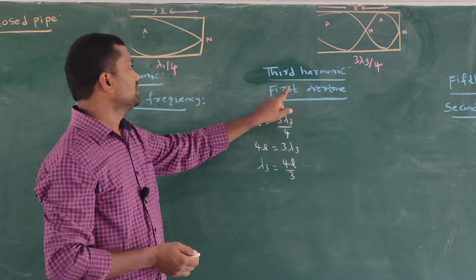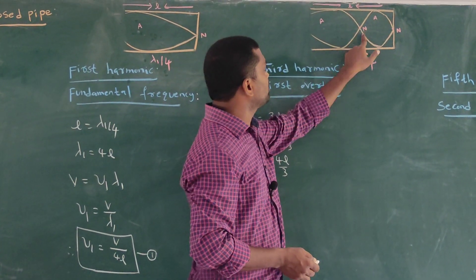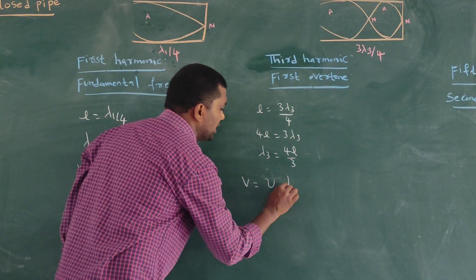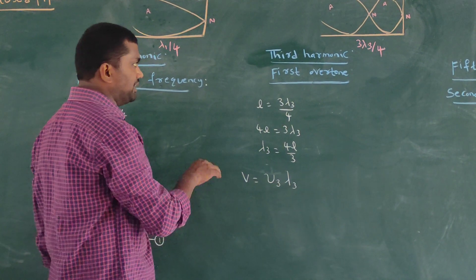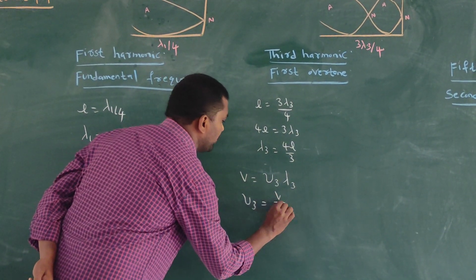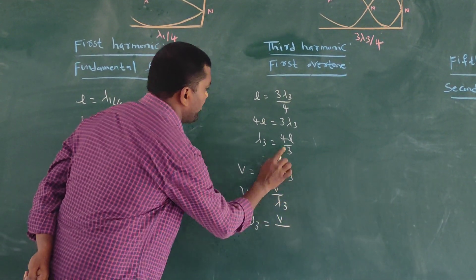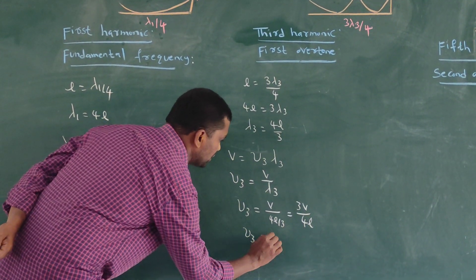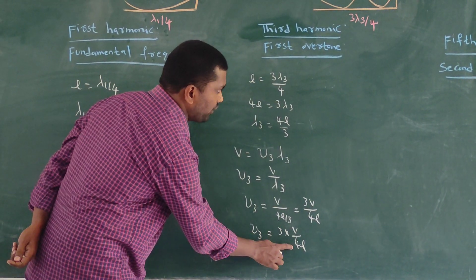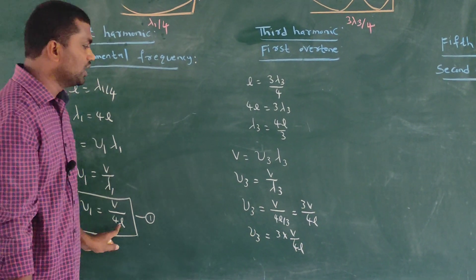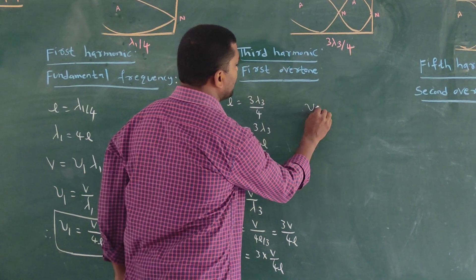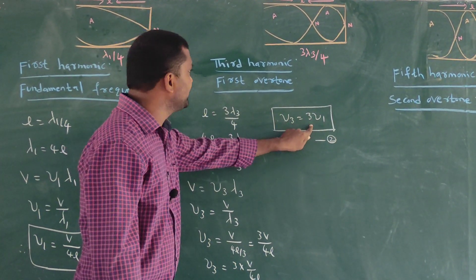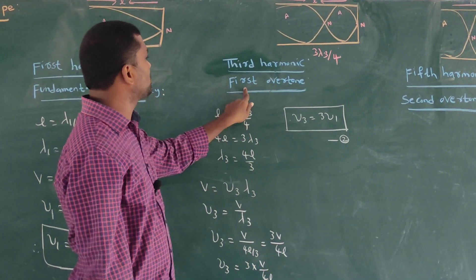We can observe the frequency of the third harmonic, which is also the first overtone. It contains two antinodes and two nodes, and the length L equals 3λ₃/4. Using v = ν₃λ₃, we get ν₃ = v/λ₃ = v/(4L/3) = 3v/4L. Since v/4L is the fundamental frequency ν₁, we can write ν₃ = 3ν₁. This is equation number 2, called the third harmonic or first overtone of the closed pipe.